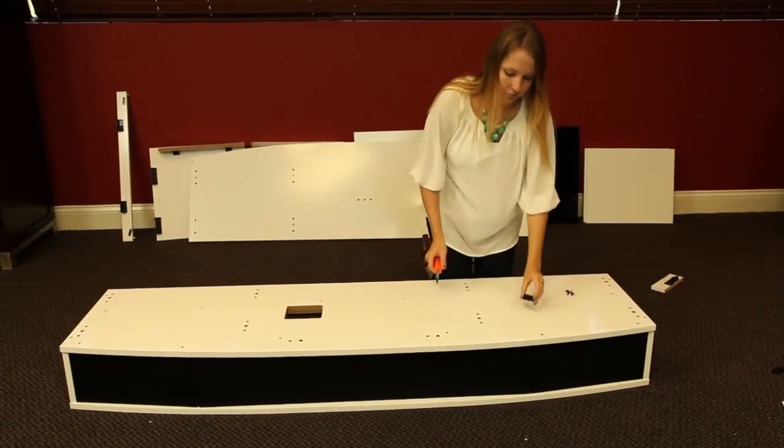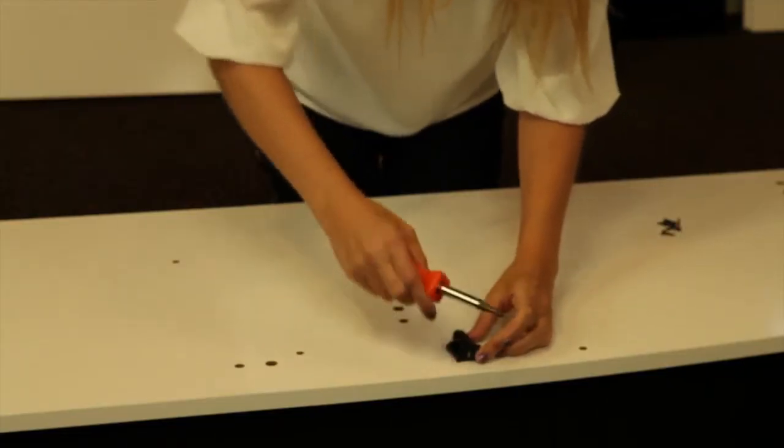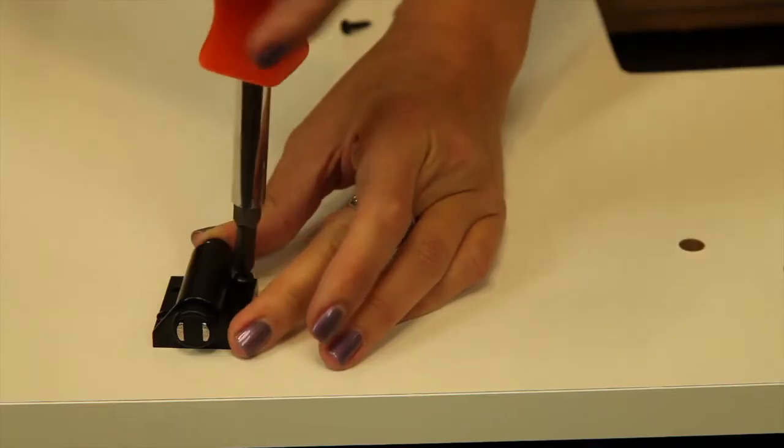Set the top assembly on the ground, bottom side up. Using a Phillips head screwdriver, install the door magnets into the top assembly as shown.